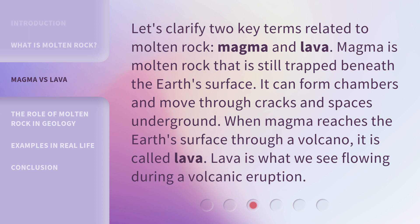When magma reaches the Earth's surface through a volcano, it is called lava. Lava is what we see flowing during a volcanic eruption.